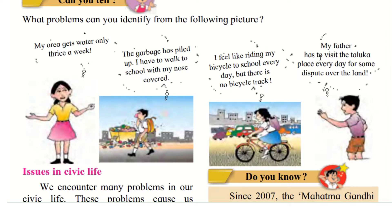And the fourth picture: 'My father has to visit the Taluka office every day for some dispute over the land.' Dispute means there is a problem with other people. Instead, if his father could check the status through the internet sitting at home, the Taluka office should upgrade themselves and put everything on their website, so his father does not have to travel all the way, leave his work behind, and waste time, money, and effort.